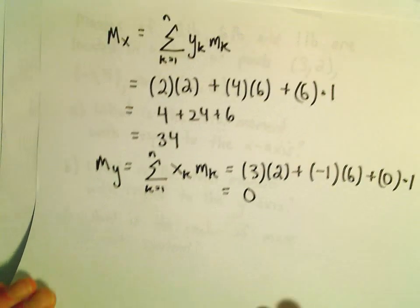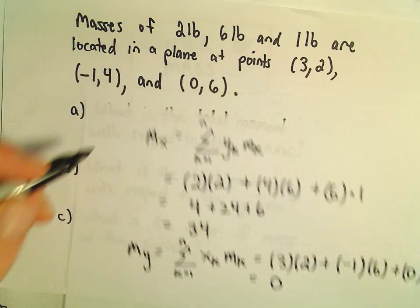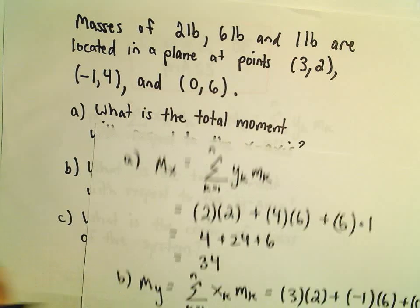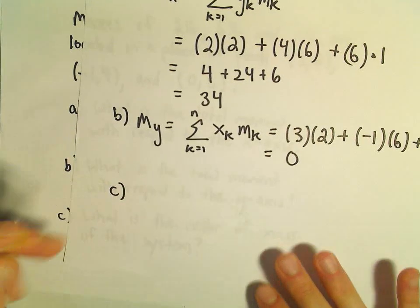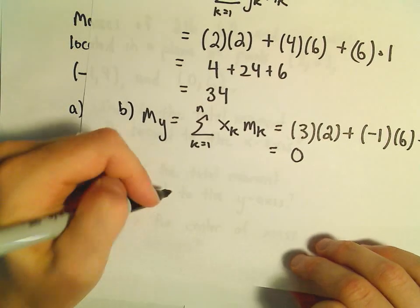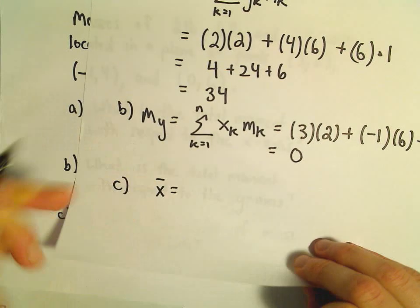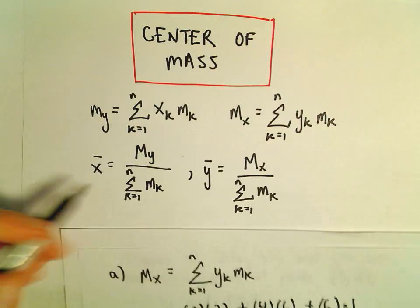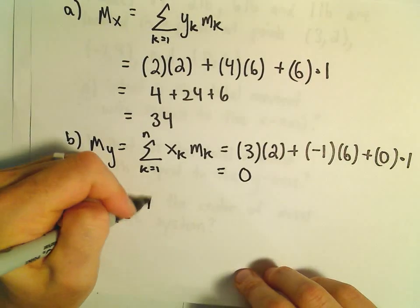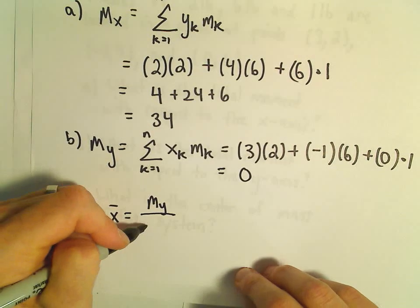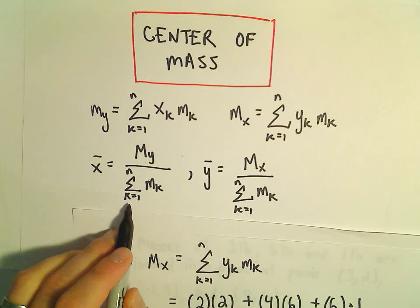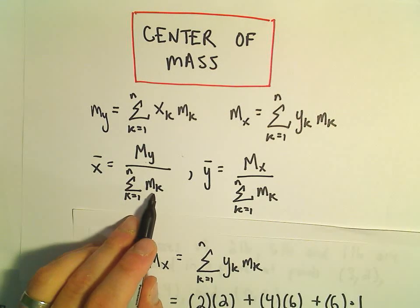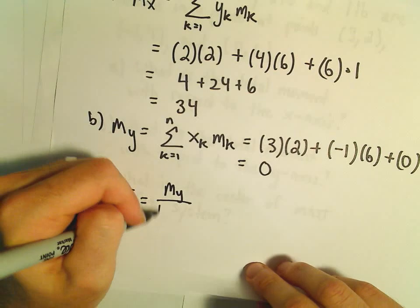So let's go ahead and do the last part as well. That would be our part a, our part b. Let's go ahead and figure out what the center of mass is. So to get x-bar, our formula says x-bar is the moment about the y-axis, divided by the sum from k equals 1 up to n of m sub k. All that represents is the total mass.